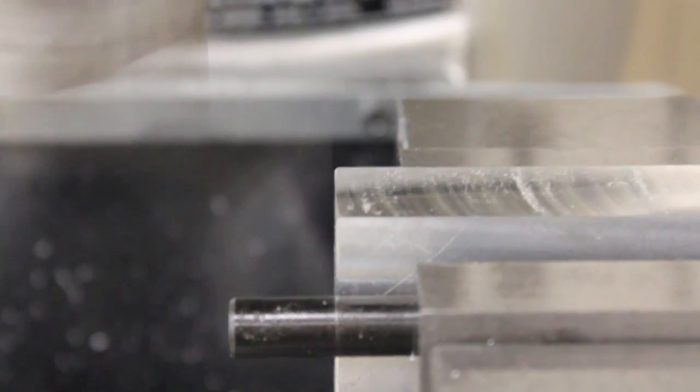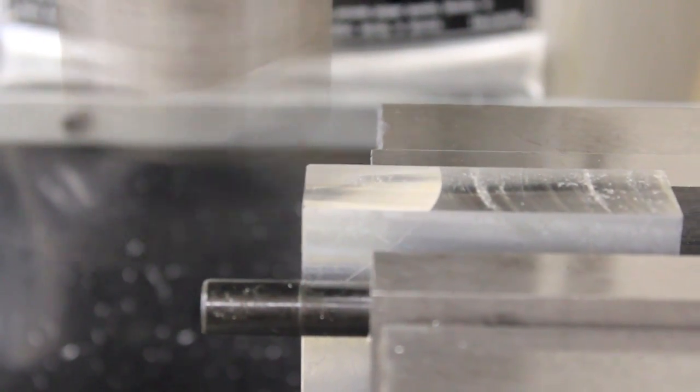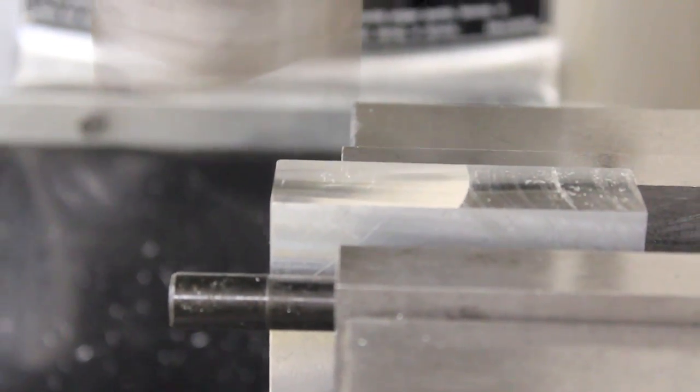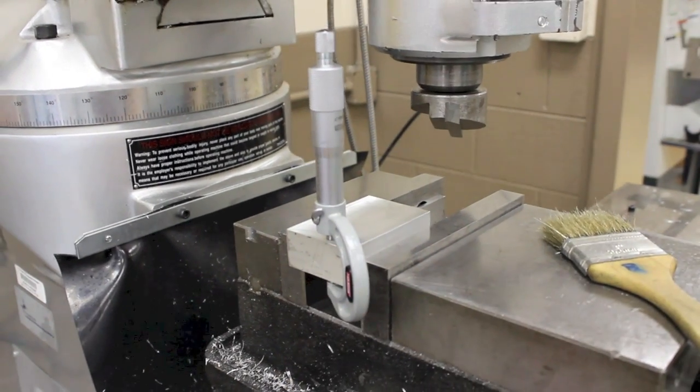You will repeat this process until all four faces have been machined to size. Don't forget to check the block dimensions with a micrometer.